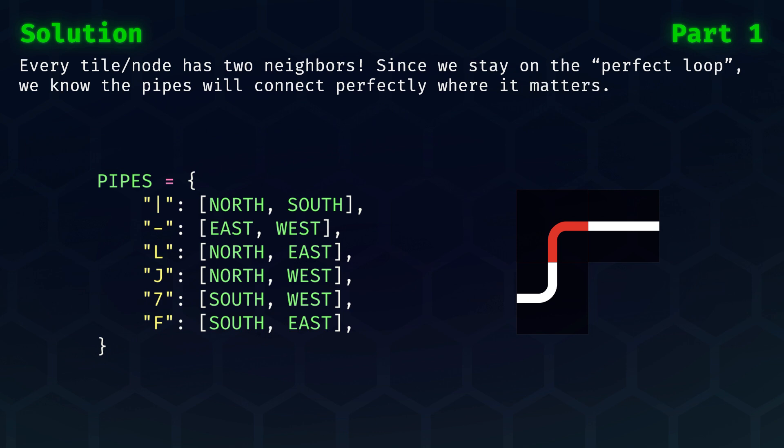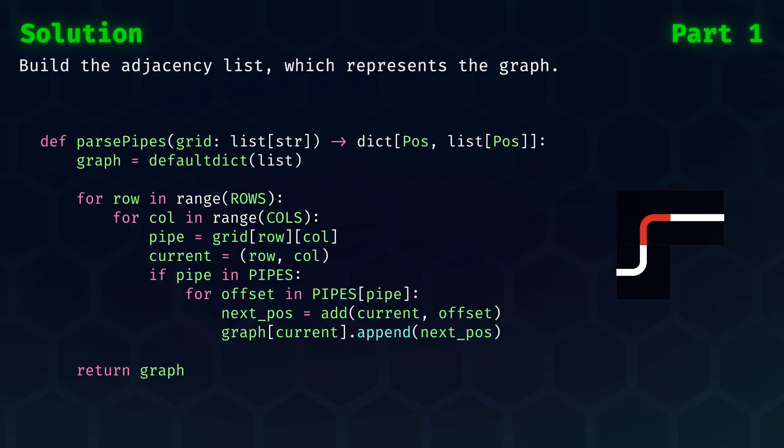For every field in our grid, we can just blindly set up the connections like this. Why? Because we know that we will stay on the perfect loop, so we know that the pipes will connect perfectly where it matters. Given the preparations that we did, parsing the grid into the adjacency list now is very simple.